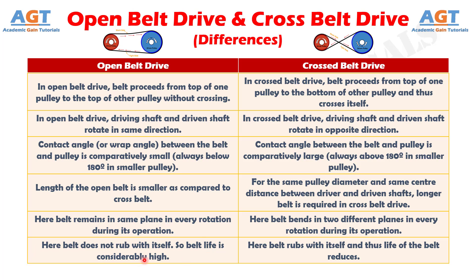So belt life is considerably high, whereas in crossed belt drive, the belt rubs with itself and thus the life of the belt reduces.